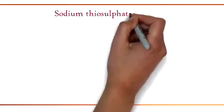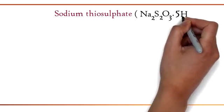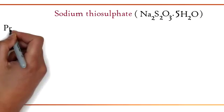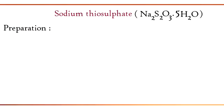The formula for sodium thiosulfate is Na2S2O3·5H2O. Let us see the preparation of sodium thiosulfate.